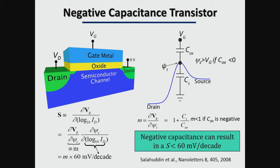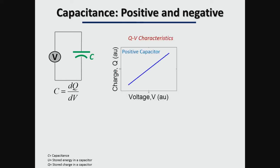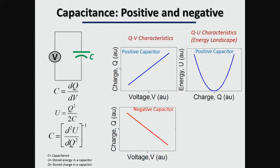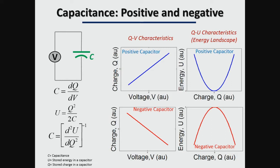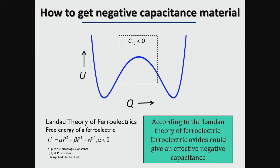So far I've talked about the concept but haven't told you how to get a negative capacitance material — that's the main story. Capacitance is the rate of increase of charge with voltage. For a positive capacitor, charge increases as voltage increases; for a negative capacitor, charge decreases as voltage increases. You can also define capacitance in terms of energy: energy is q²/2C. A positive capacitor has a positive radius of curvature at q=0, while a negative capacitor has an inverted parabola energy landscape with negative curvature at q=0. According to Landau theory, ferroelectrics have a double-well energy landscape which under certain charge conditions can give negative capacitance.